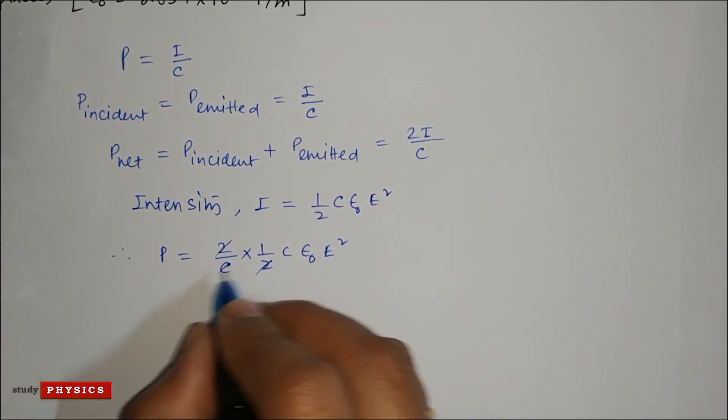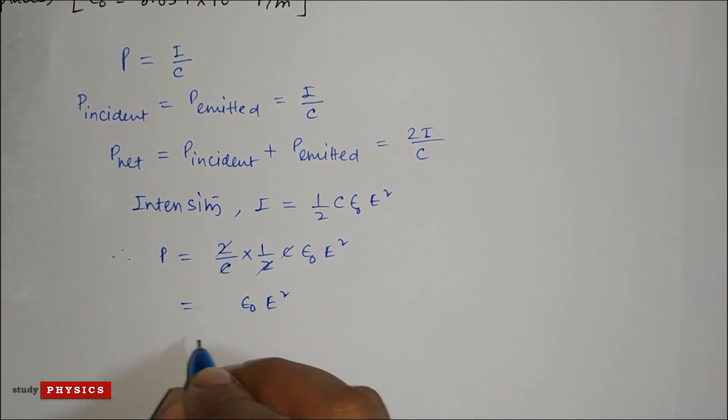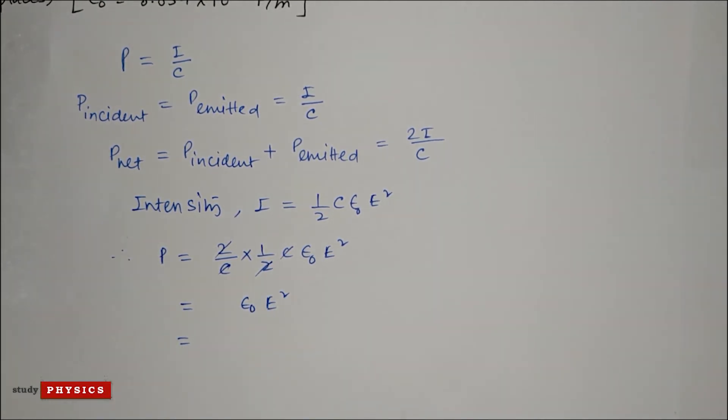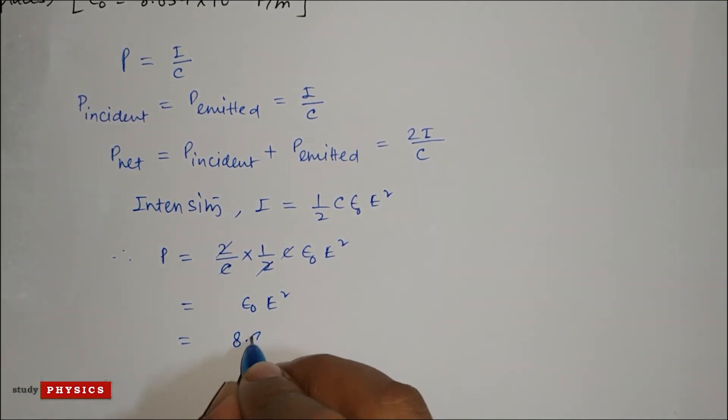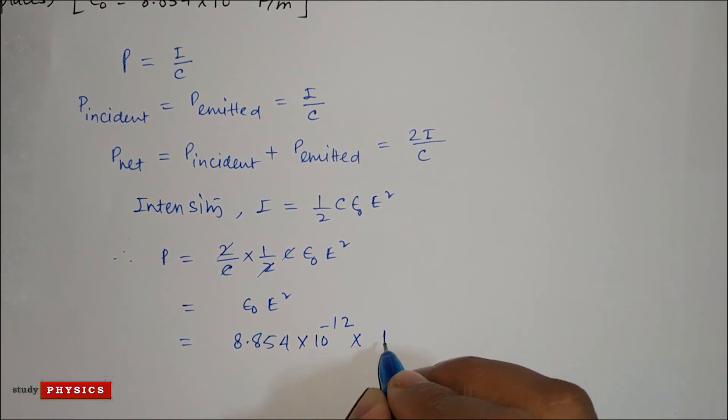So 2 and c will cancel out, giving us epsilon naught e squared. They have given the value of epsilon naught, which is 8.854 times 10 to the power minus 12 farad per meter, into 1 volt per meter squared.